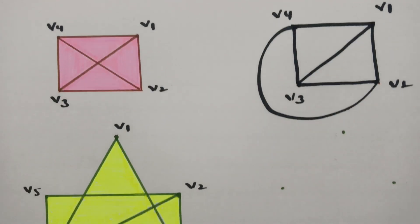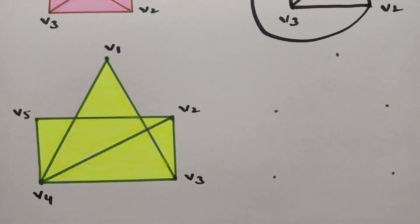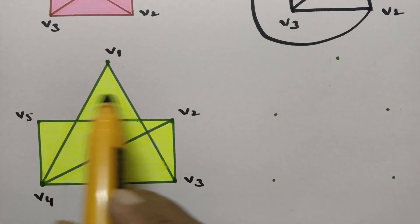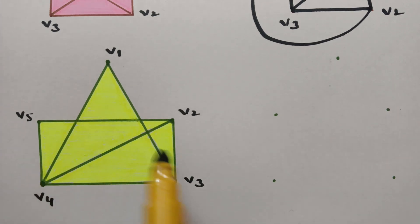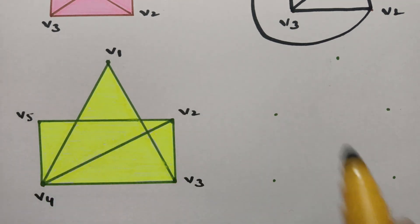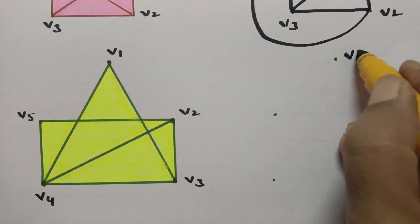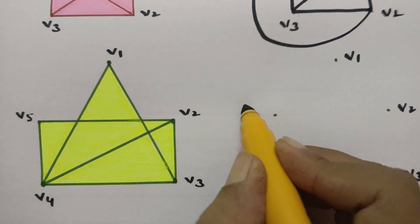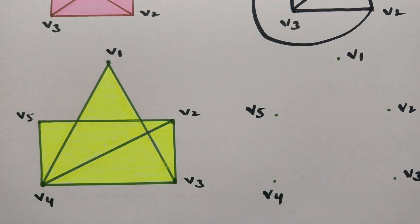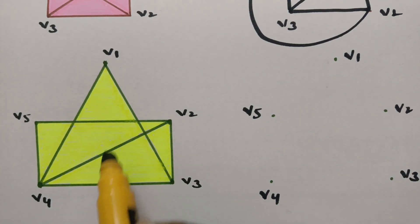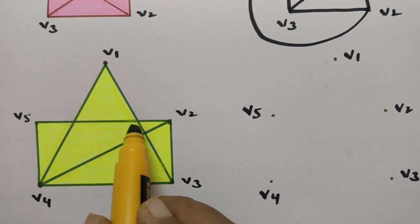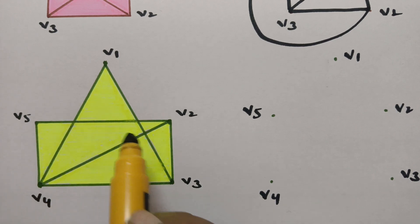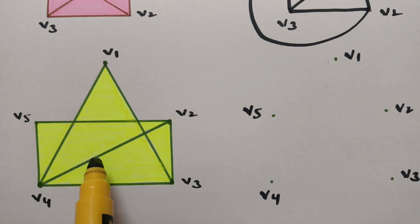The next example has 7 edges and 5 vertices: V1, V2, V3, V4, and V5. There are edge crossings here and here, so this graph is called a non-planar graph. Now I will redraw this one without edge crossing.